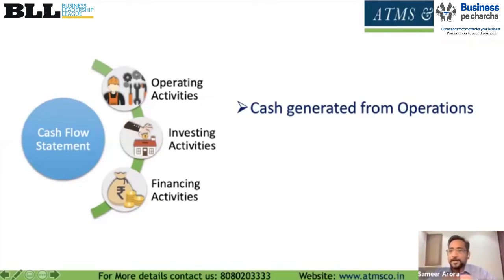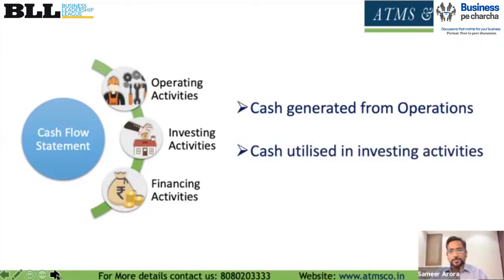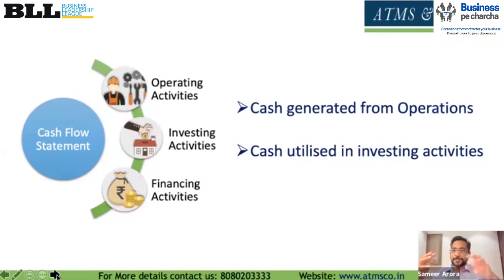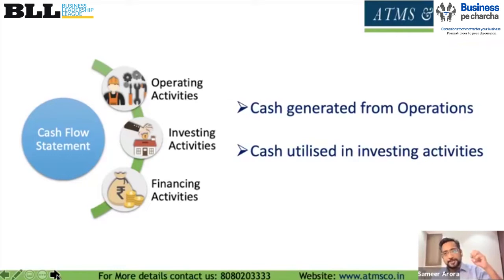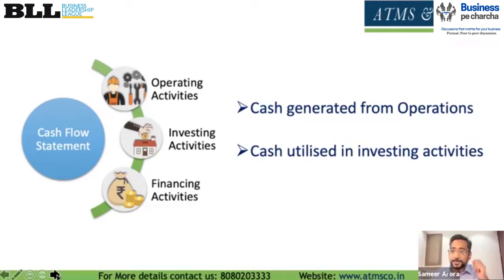You need to know whether you generated enough cash flow from operations. The second part is investing activities. This refers to whether money has gone into cash-flow-generating assets. We want to make money and use that money for the right purpose, so that it again makes money. We need to get into a positive cycle where profits convert into cash flows, which are invested into further income-generating assets, creating a ballooning effect.